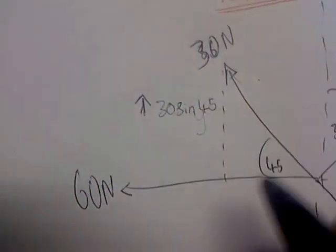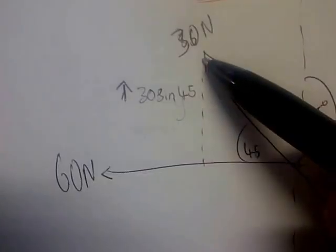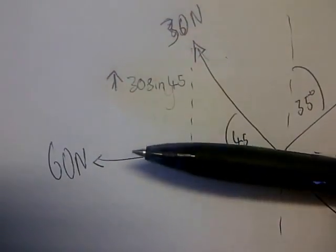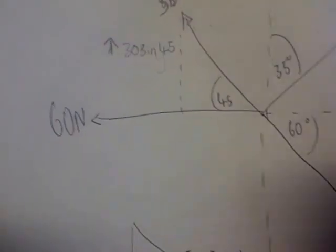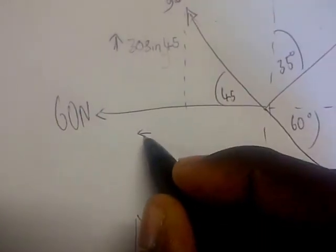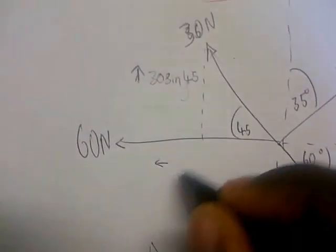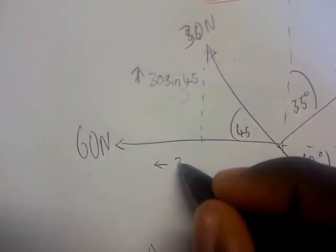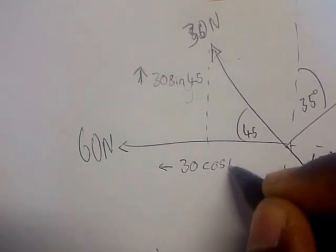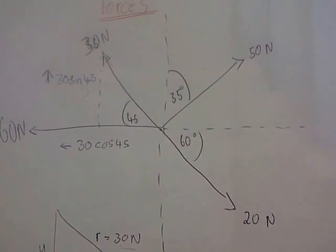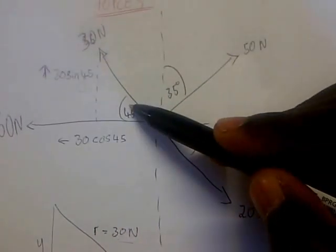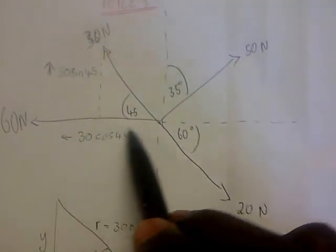If we resolve this force at an angle of 45° to the horizontal, it's going to point west, which is our left-hand side. So the horizontal component is 30 cos 45, going to the left. Always remember: when working with forces, we don't solve forces at an angle — we only solve forces in a vertical component or horizontal component.